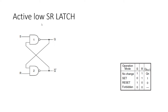In my previous video I have already discussed about the active low SR latch. That is nothing but two NAND gates connected in a particular fashion, with S and R as two inputs. This was the truth table we got: if S=1 and R=1, the output Q will remain at the previous state, denoted as Q(N+1) = Q(N).